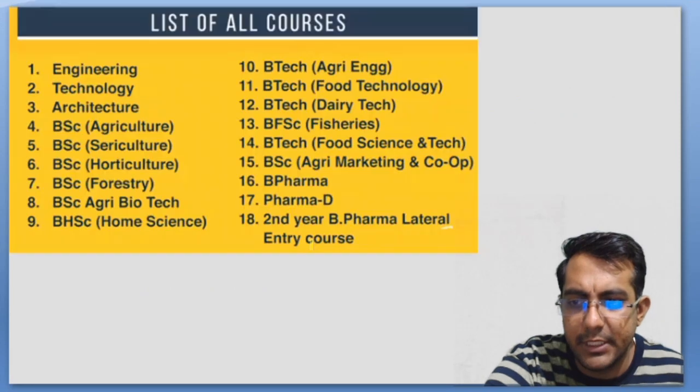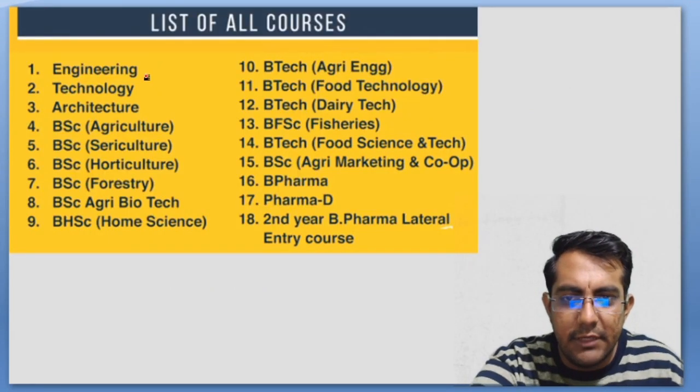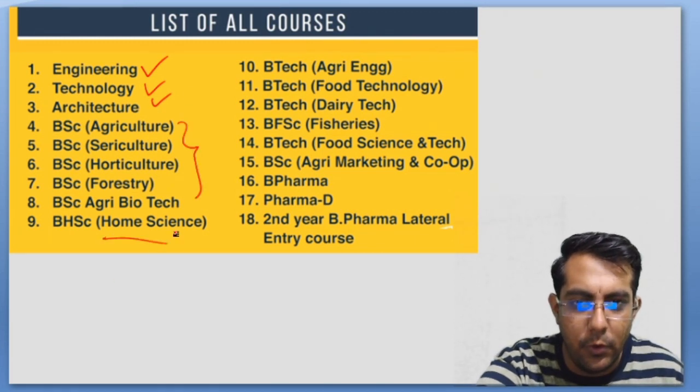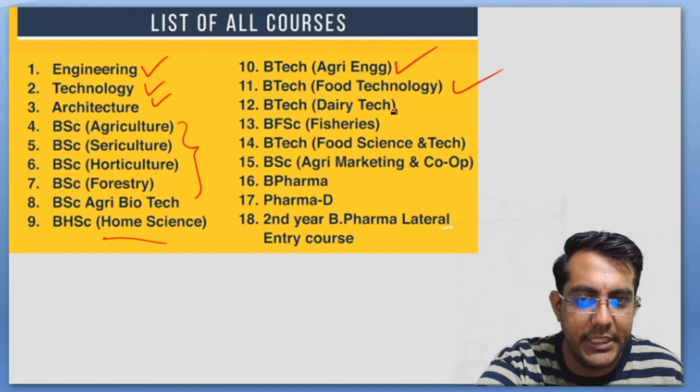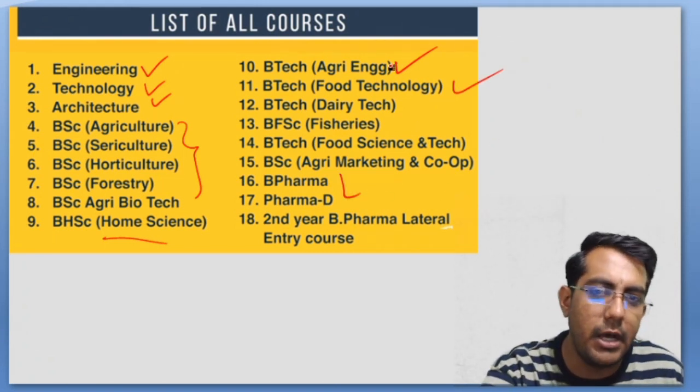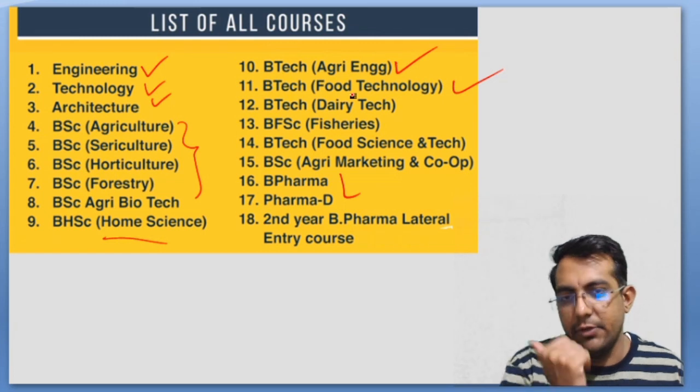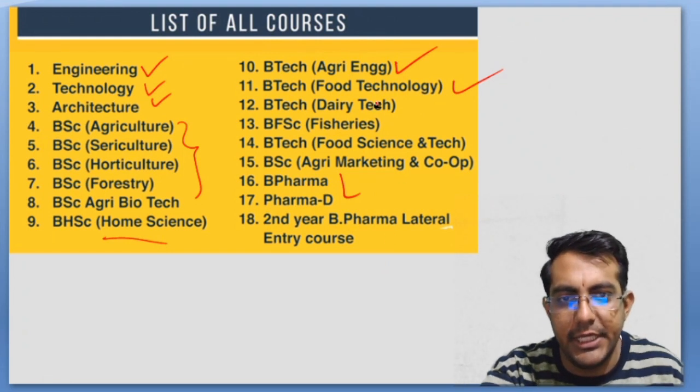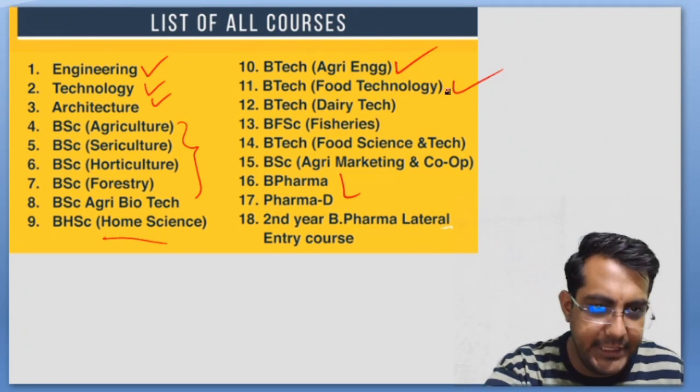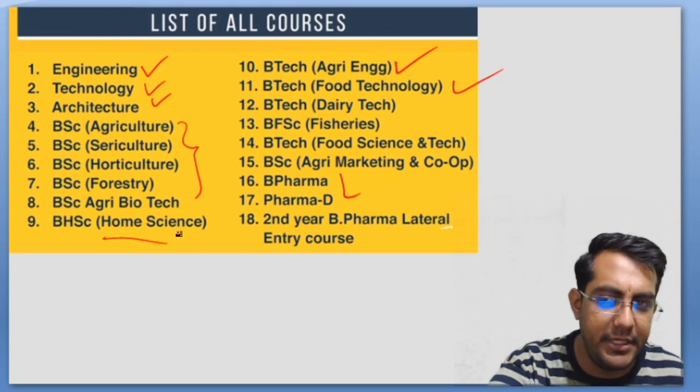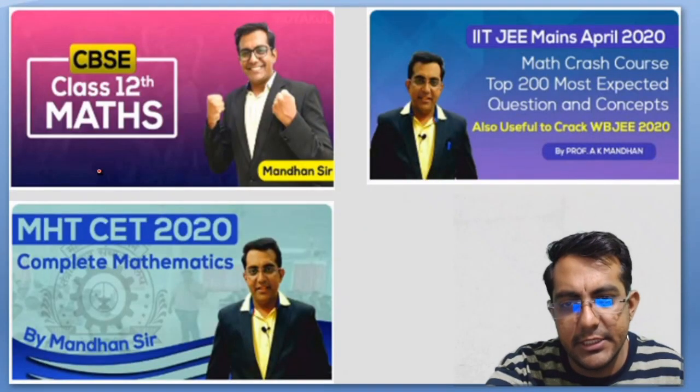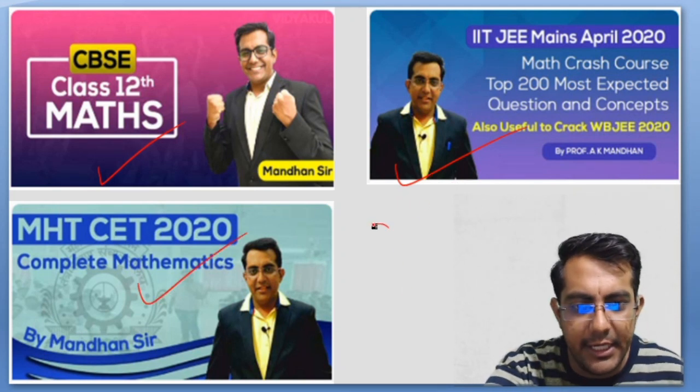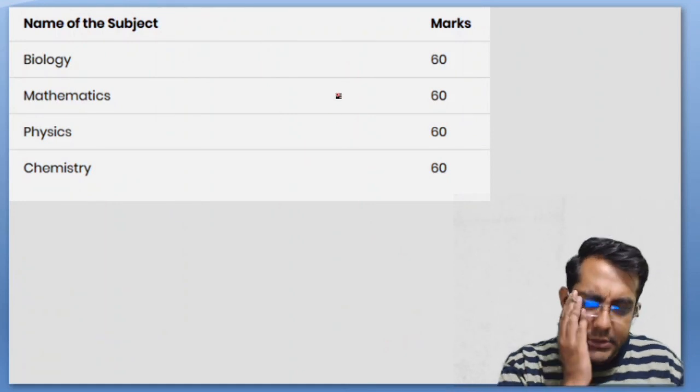When it comes to the list of courses - engineering, technology, architecture, BSc, home science, agriculture, food technology - even for pharmacy you need KCET. For all these courses, if you are preparing, you need to appear for KCET, and only Karnataka state students can appear.